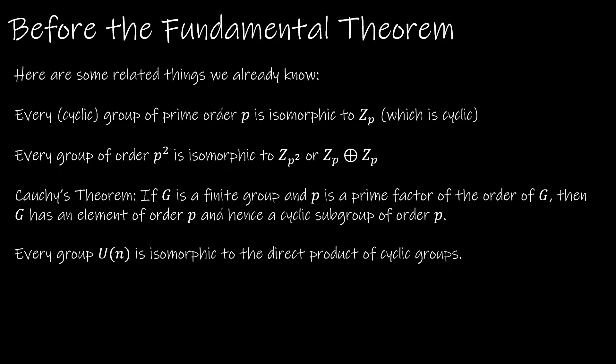Before we talk about the fundamental theorem of finite abelian groups, here are some things we already know that have led us up to this point. Every group of prime order is isomorphic to Z sub P — both are cyclic groups. Every group of order P squared, where P is prime, is isomorphic to Z P squared or Z P cross Z P, an external direct product. We also have Cauchy's theorem: if G is a finite group and P is a prime factor of the order of G, then G has an element of order P and hence a cyclic subgroup of order P. We also talked in detail about the group U of N being isomorphic to the direct product of cyclic groups.